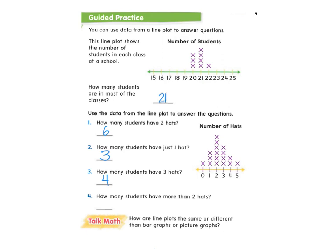How many students have more than two hats? Is two more than two? Nope. Is three more than two? Yep. Is four? Yep. Is five? Yep. So it's everything after the two. I'm counting the number of students after that two: one, two, three, four, five, six, seven students have more than two hats. It does not include two. If it said two or more, then I would include the number two, because it would be two or more than two.